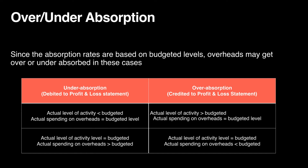Over absorption occurs when the firm made more units than estimated — actual activity is greater than budgeted activity — so the firm recovered more for overheads than expected, which is a profit. Alternatively, you could have made as many units as expected but actual overheads turned out to be less than estimated. For example, if maintenance cost was estimated at $10,000 but actual was $8,000, that extra $2,000 recovered from the customer adds to your profit.